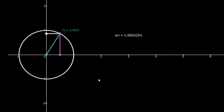In trigonometry, we're interested in the ratio of the sides of the triangle for different angles. The first trigonometric identity we're going to look at is the sine function. In the sine function, we're interested in the ratio of the pink line to the blue line. The length opposite the angle is called the opposite, and the length adjacent to the angle is called the adjacent. The hypotenuse is the blue line, which is just the radius of the circle. In the sine function, we're interested in the ratio of the opposite to the hypotenuse.